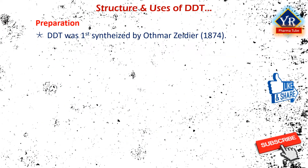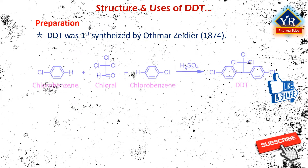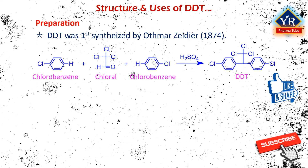DDT was first synthesized in 1874 by Otmar Zedier under the supervision of Adolf von Bayer. DDT is prepared by the reaction of chloral, which is a trichloroaldehyde, with two equivalent molecules of chlorobenzene in the presence of an acidic catalyst — that is sulfuric acid.